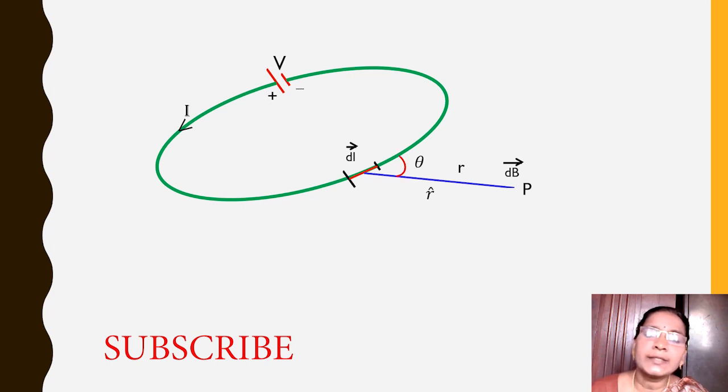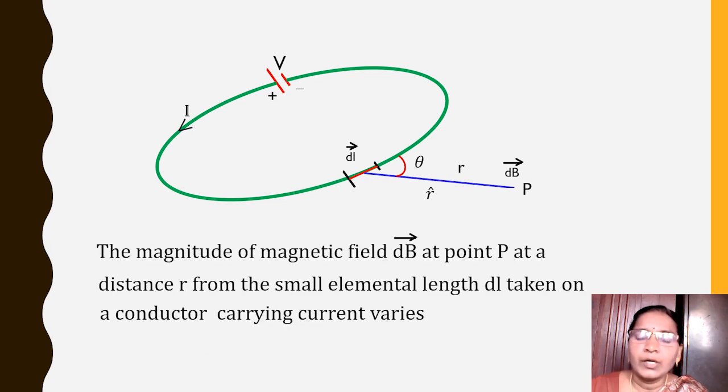Also, they considered that the line element DL and the unit vector R̂ made an angle theta between them.